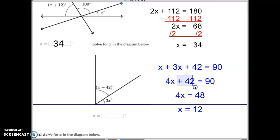x plus 3x is 4x. Then how do I cancel out the positive 42? I add a negative 42. Whatever I do to that side, I do to this side. 90 plus negative 42 is 48. And then how do I get rid of the 4, which is being multiplied by the x? I divide by 4. Whatever I do to one side, I must do to the other side. When I divide both sides by 4, we get x equals 12.